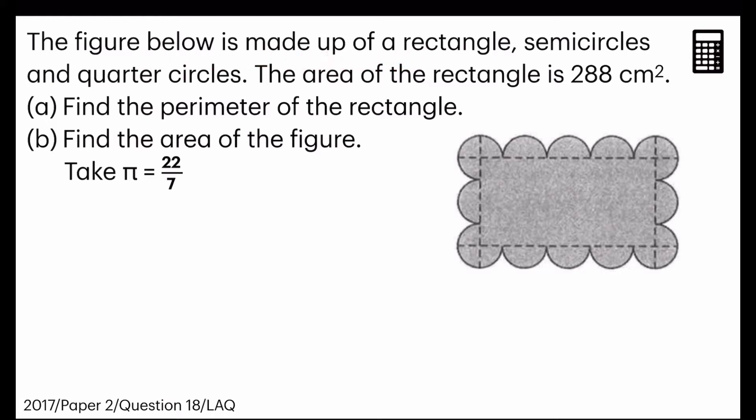The figure below is made up of a rectangle, semicircles, and quarter circles. The area of the rectangle is 288 square centimeters. A. Find the parameter of the rectangle.